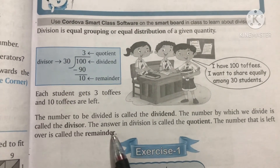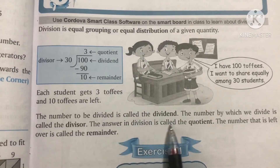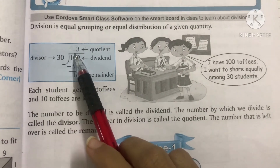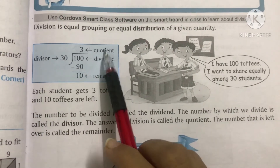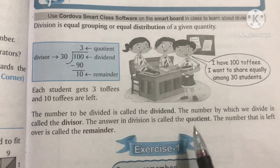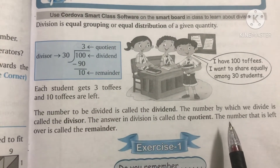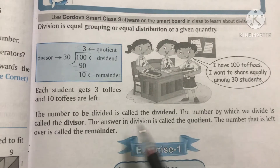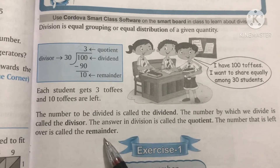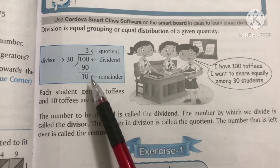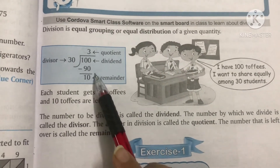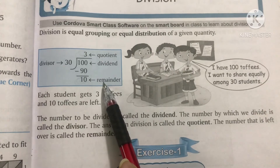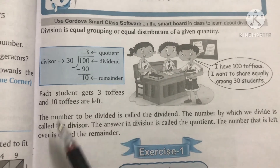The answer in division is called the quotient. The answer we get is 3, so 3 is the quotient. The number that is left over is called the remainder. Here, the left over number is 10, so it is the remainder.